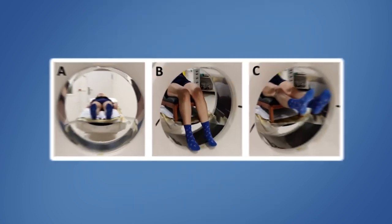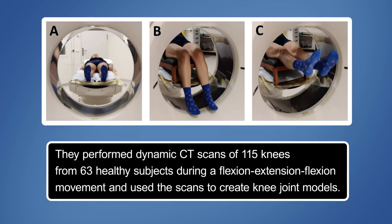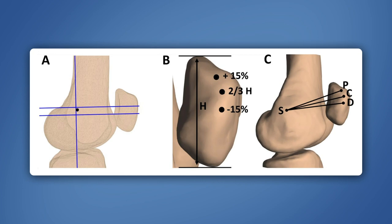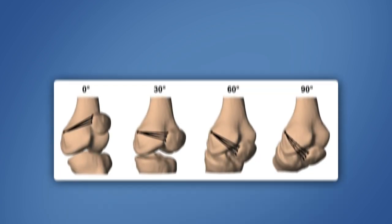In a recent study, researchers sought to understand the physiological strain behavior of the native MPFL to inform better surgical graft placement. They performed dynamic CT scans of 115 knees from 63 healthy subjects during a flexion-extension-flexion movement and used the scans to create knee-joint models. They measured the MPFL length as the shortest wrapping path from the femoral Schottel's point to three insertion points on the patella's supramedial border: the proximal, central, and distal points.